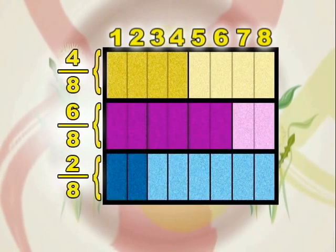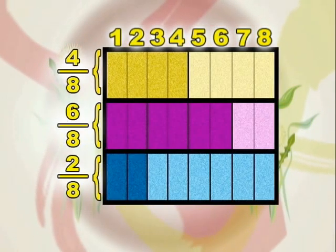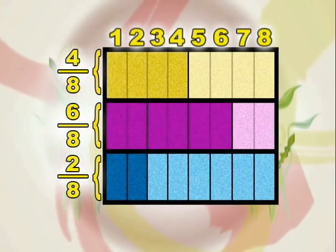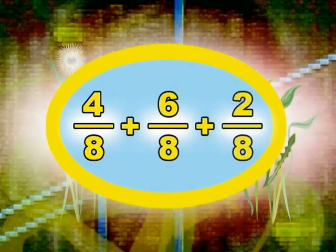Replacing our first two fractions such that all three will have the same denominator, our equation may now be written as four-eighths plus six-eighths plus two-eighths.